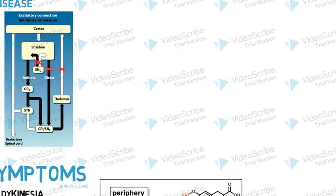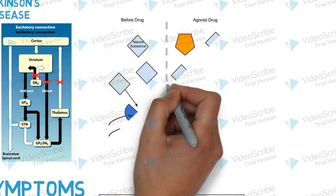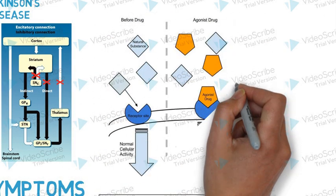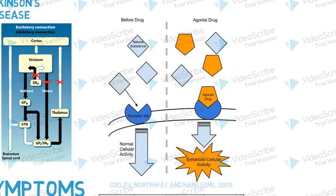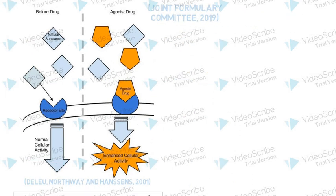An alternative to levodopa treatments is to use dopamine agonist drugs. Dopamine agonist drugs bind to the dopaminergic receptors, so do not need to be converted to dopamine. While the side effects are less crippling, dopamine agonists can cause patients to develop impulse control disorders such as gambling addiction, binge eating, and hypersexuality.